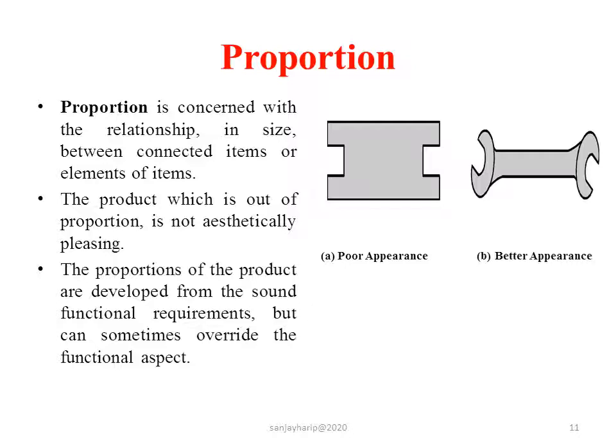Let us see another feature of aesthetics — that is proportion. Proportion is considered in relation to the sides between connected elements, as shown in figures A and B. Both figures are of a spanner and both satisfy the functional requirement, but aesthetically, figure B looks better than figure A. So, the customer will select the spanner shown in figure B.